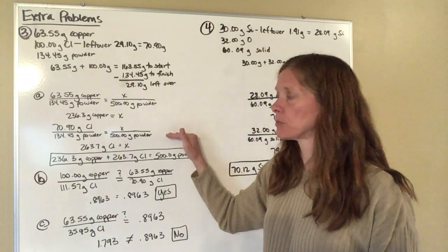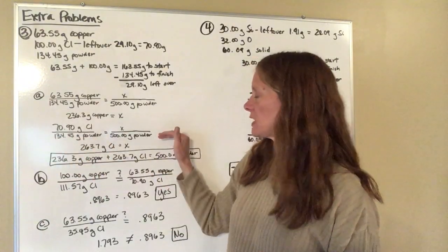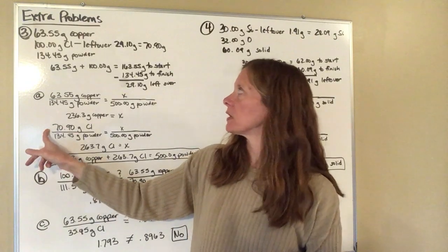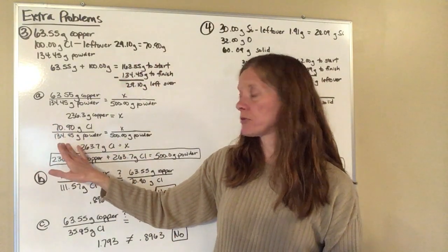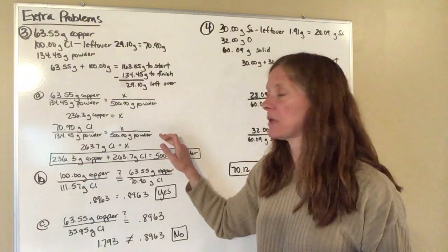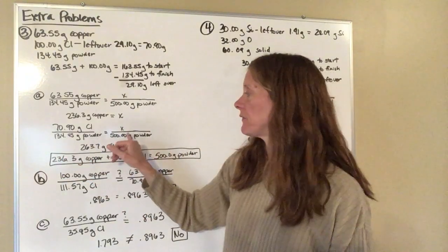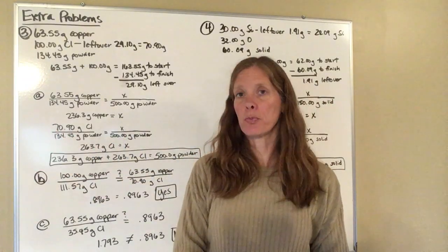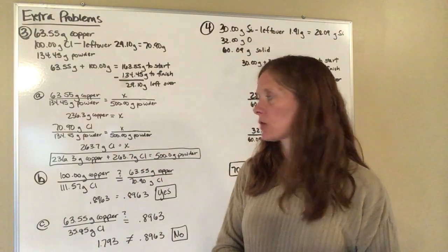You're going to set up a very similar ratio for the chlorine. Again it looks almost identical to this proportion except I've put the chlorine on the top, 70.90 grams, because that's the amount I determined that I was using to the 134.45 and I'm now going to make 500 grams of powder. So when you type it into your calculator you're going to have 500 times 70.9 divided by 134.45 and that will give you 263.7 grams of chlorine.